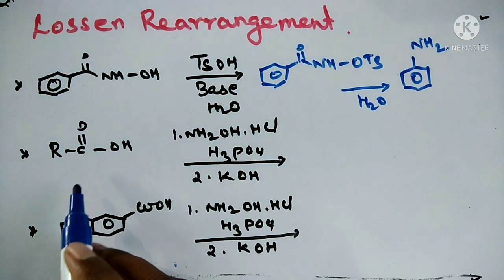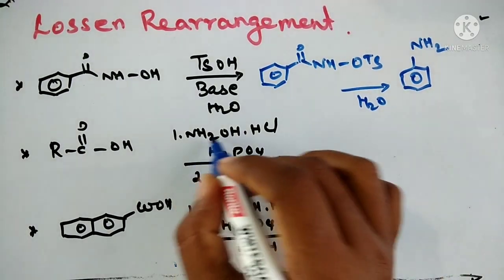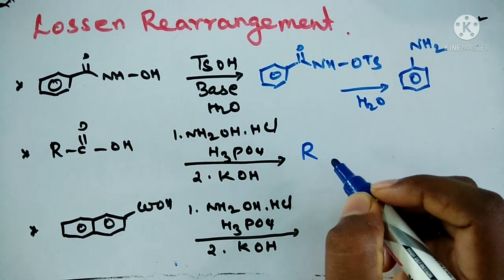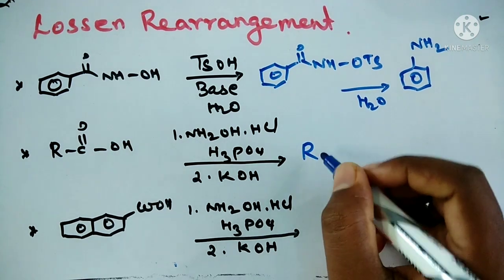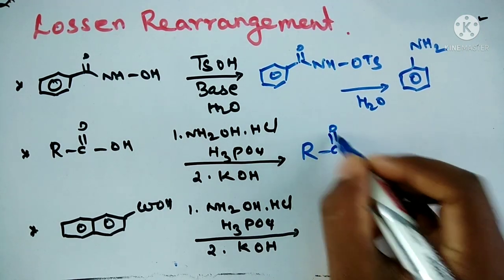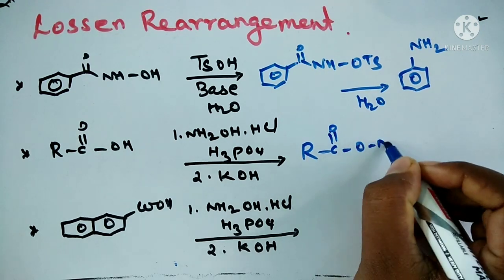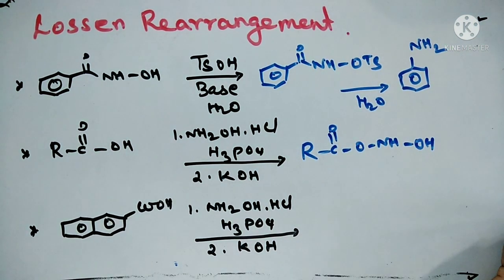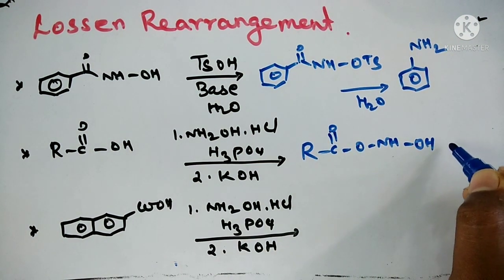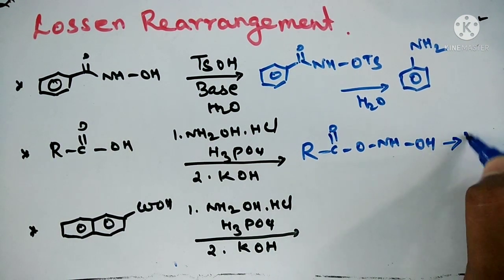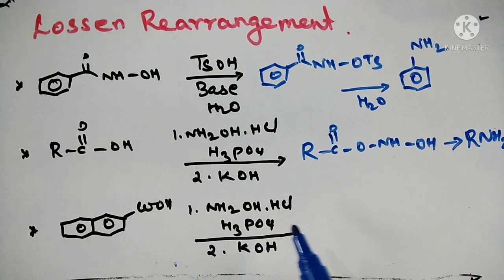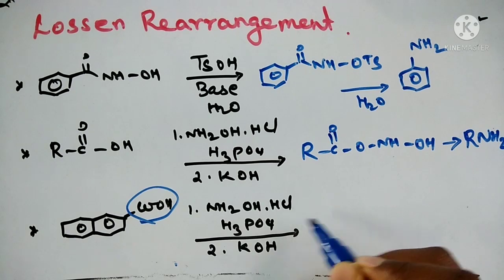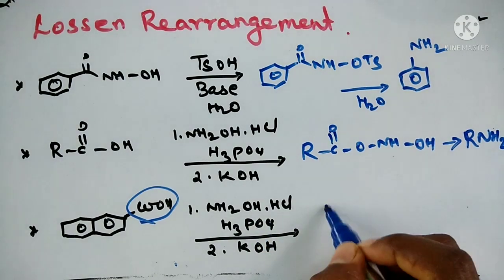The next example: an acid reacts with hydroxylamine hydrochloride to form a hydroxamic acid. In the presence of base, it will convert into an amine. The same way, the acid will convert into the amine in the presence of hydroxamic amine and potassium hydroxide.